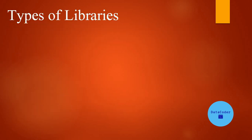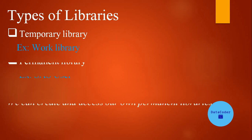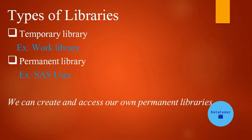Next we will see the types of libraries. In SAS we have two types of library: one is a temporary library and another is a permanent library. The work library is a temporary library, and for example SAS user is a permanent library. We can create and access our own permanent libraries as well.